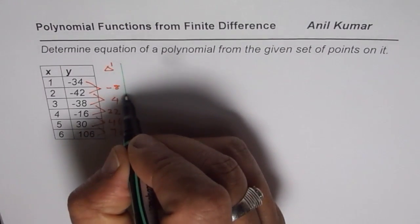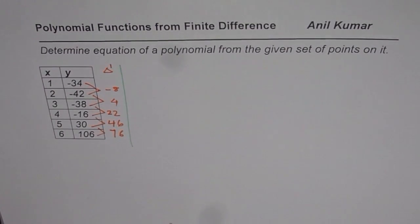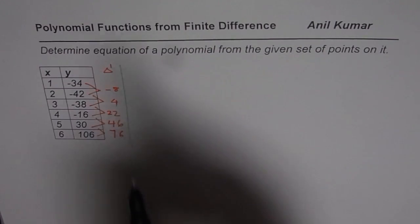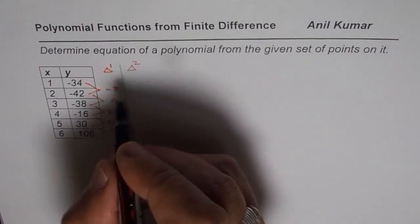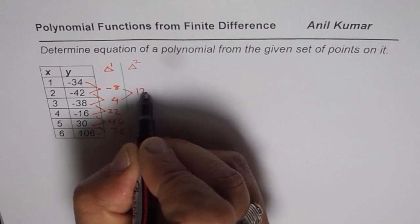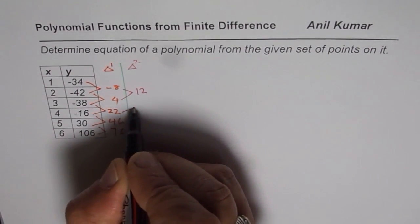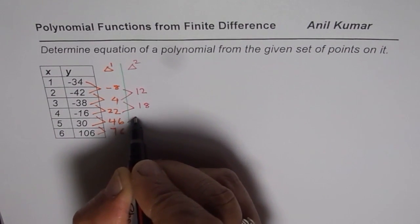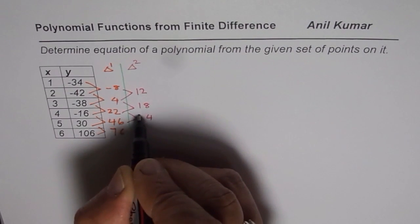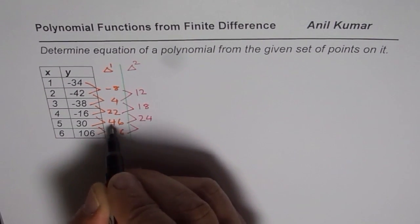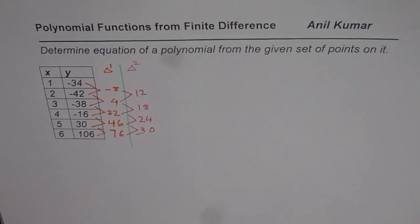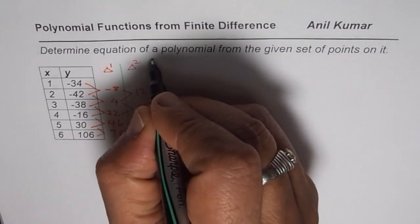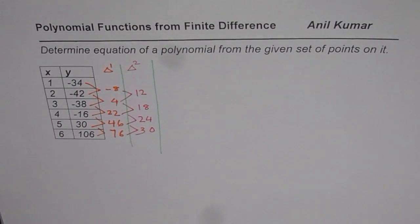Now let us find the second difference. We know that the polynomial is not linear. We do the same process again: 4 minus minus 8 gives us 12. 22 minus 4 gives us 18. 46 minus 22 gives us 24. And 70 minus 46 gives us 30. The second difference is also not constant, so we will continue this process until we get a constant finite difference.